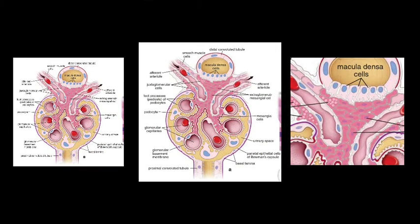We are going to see about the juxtaglomerular apparatus. First, let's get oriented with this diagram. This is a section of the renal corpuscle. At the vascular pole of the renal corpuscle, we can see certain differentiated structures. This is the afferent arteriole, this is the efferent arteriole, and this is the part of the distal convoluted tubule.